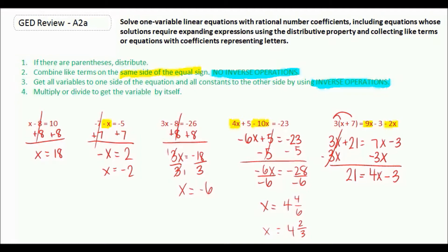Since my x's are on the right side, I need my constants on the left. So to get rid of minus 3, we're going to add 3. So we have 24 equal to 4x. And the final step is to divide by 4, and x equals 6.